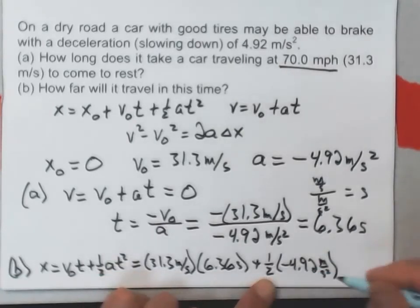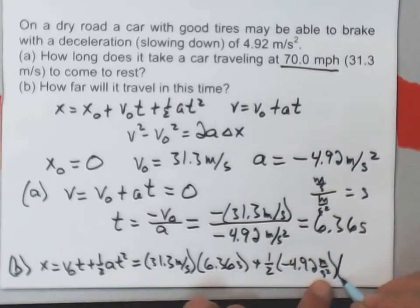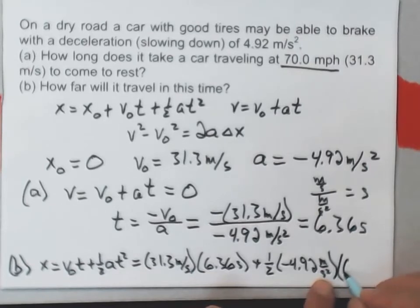plus 1 half times minus 4.92 meters per second squared. I was putting that minus sign in there because I was thinking a step ahead, but I shouldn't do that. 6.36 seconds squared.